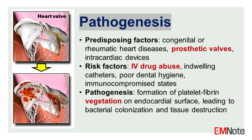The pathogenesis involves the formation of a platelet-fibrin vegetation on the endocardial surface, which serves as a nidus for bacterial colonization and proliferation, leading to tissue destruction and potential embolization.